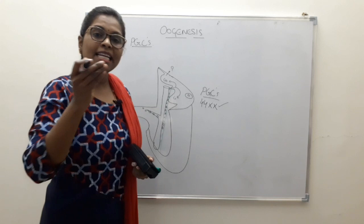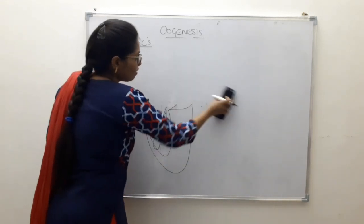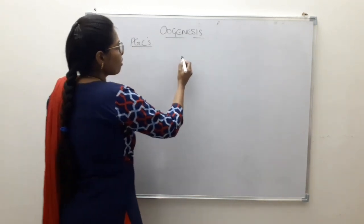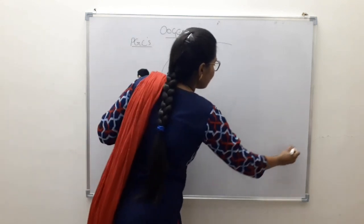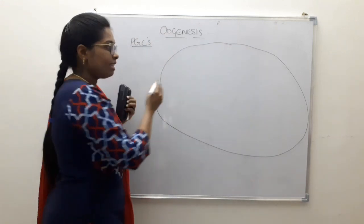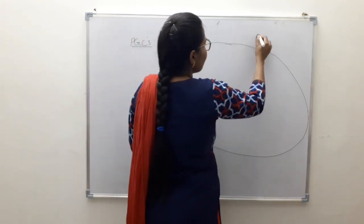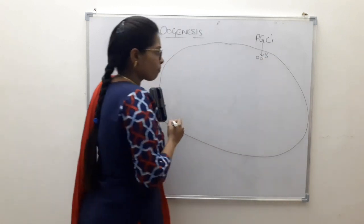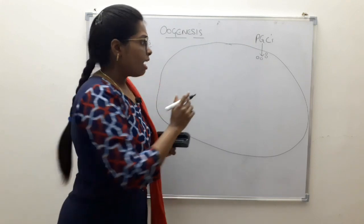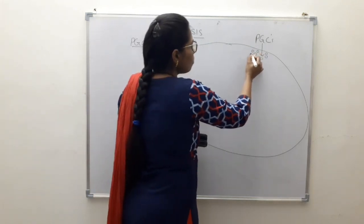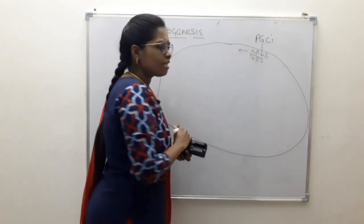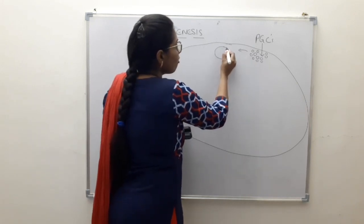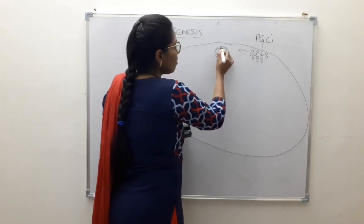Once the primordial germ cells have entered the gonad, we will see how they behave inside the ovary. Once they enter, they are now called oogonia and undergo several mitotic divisions. Around the end of the third month, these oogonia are surrounded by flattened epithelial cells, which are now called follicular cells.